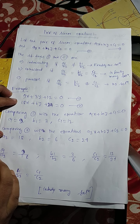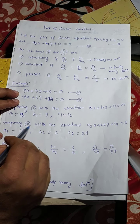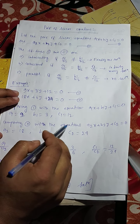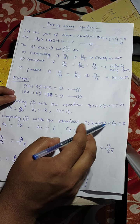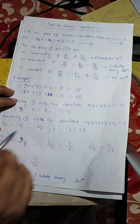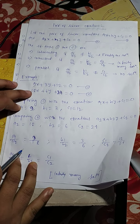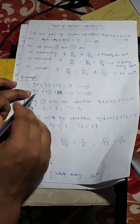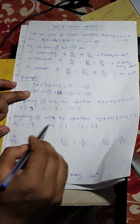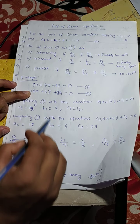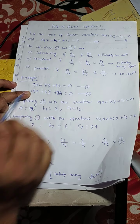Similarly, comparing equation 2 — which is 18x plus 6y plus 24 equals to 0 — with a2x plus b2y plus c2 equals to 0, we get a2 equals to 18, b2 equals to 6, and c2 equals to 24.